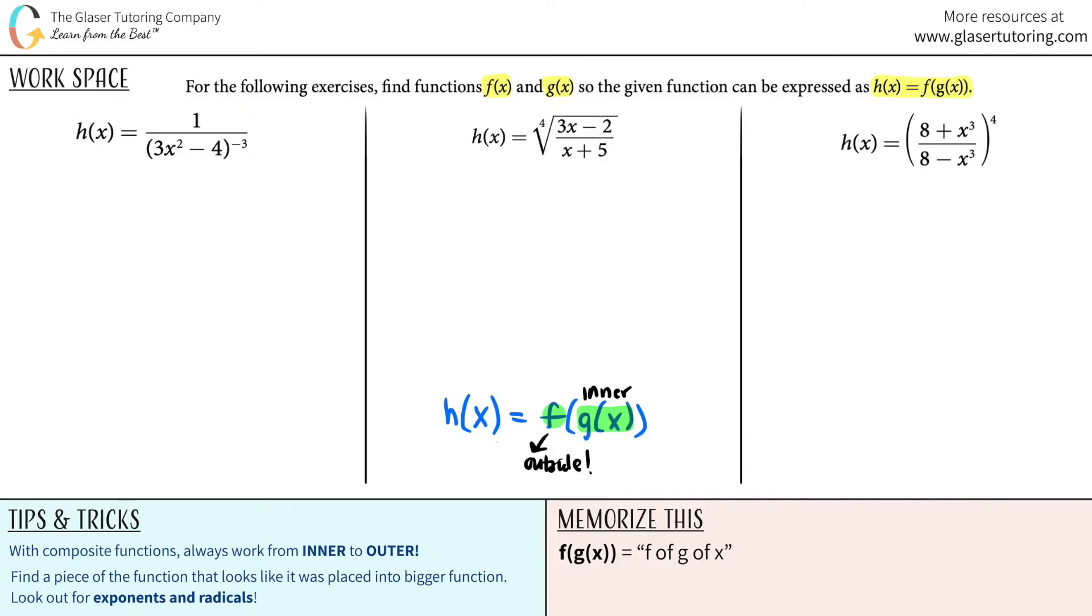So let's look for the first one. The first one is h of x equals 1 over 3x squared minus 4 all raised to the negative third. Let's see. Is there anything inside something bigger? Maybe with parentheses? Yeah, right. This whole thing, 3x squared minus 4 is inside. It's trapped in these parentheses. And that whole thing is being raised to the negative third.